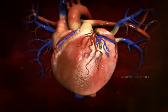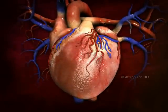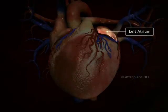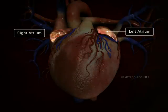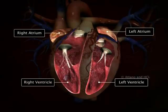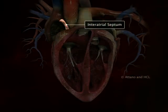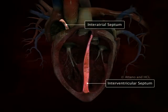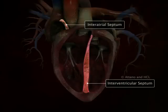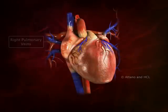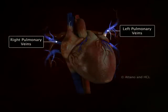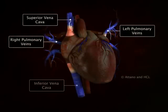Let's explore the heart's internal structure. Our heart is divided into four chambers: left atrium, right atrium, left ventricle, and right ventricle. The interatrial and interventricular septa separate the left and right sides of the heart from each other. The pulmonary veins bring blood into the left atrium, and the superior and inferior vena cava bring blood into the right atrium.